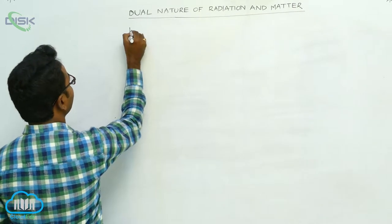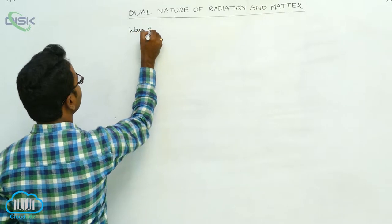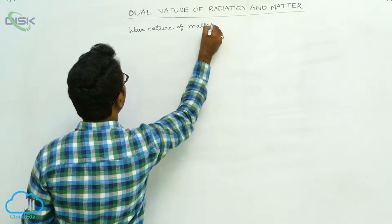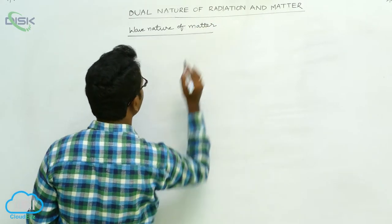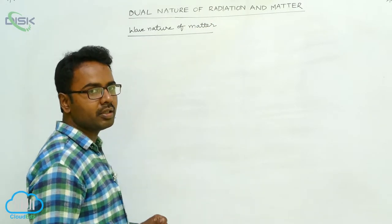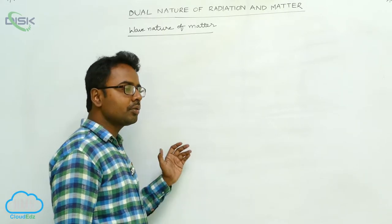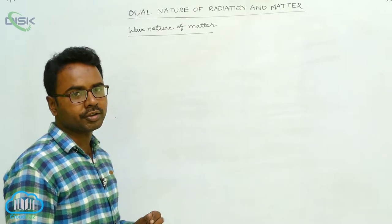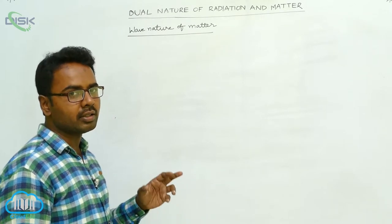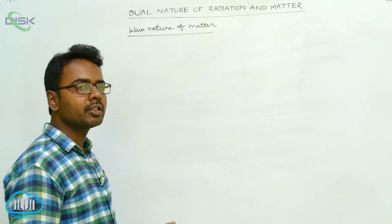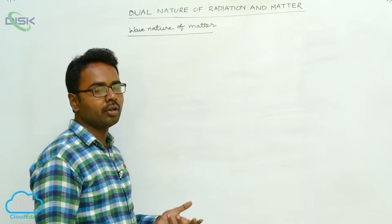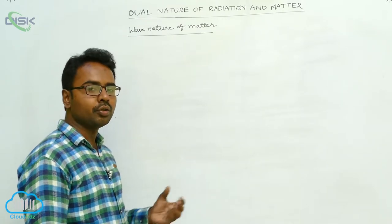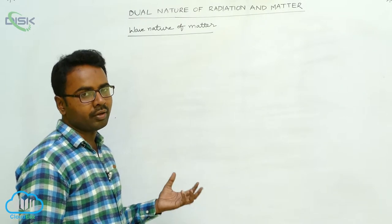Here we study the wave nature of matter. The wave nature of matter was introduced by the scientist De Broglie. We know that radiation has both wave nature and particle nature. Radiation exhibits wave nature during the phenomena of interference, diffraction, and polarisation, and it exhibits particle nature during the phenomena of photoelectric effect and Compton effect.